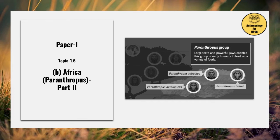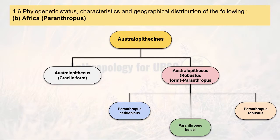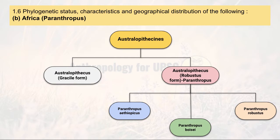Hi everyone. In the anthropology lecture series for paper one, today we'll be discussing topic 1.6 part 2. In this particular slide I'll explain what we are going to study. Basically, 1.6 part B I have divided into all parts, and today we will study about Paranthropus, because I wanted to have a continuation with part A and part B of 1.6. Paranthropus are somewhat a contested species or genus in Australopithecus, that's why we will continue to study both of them.